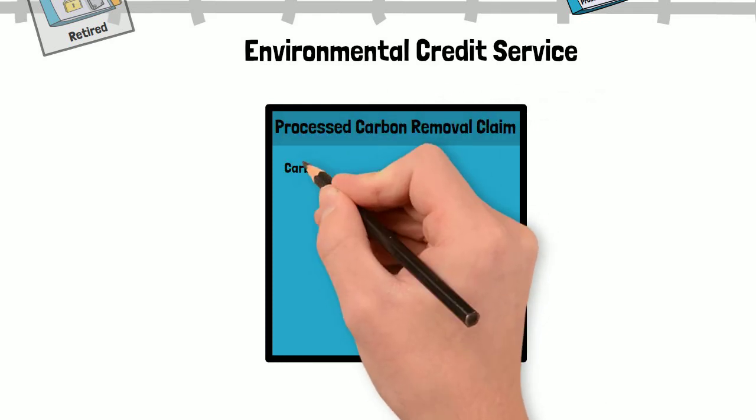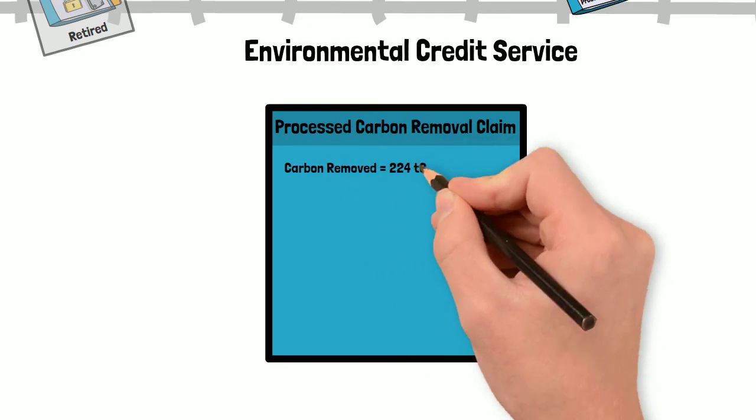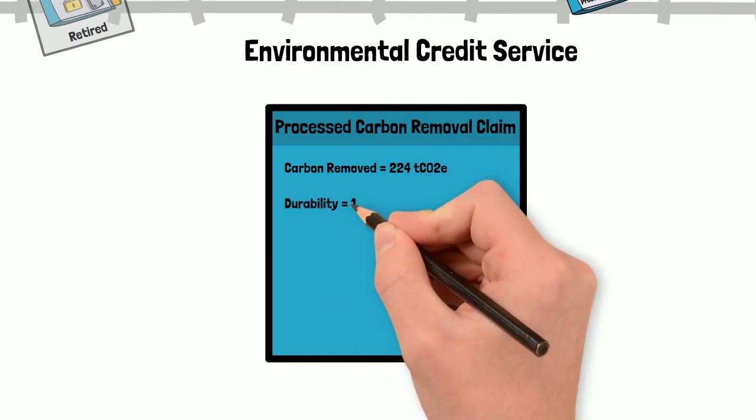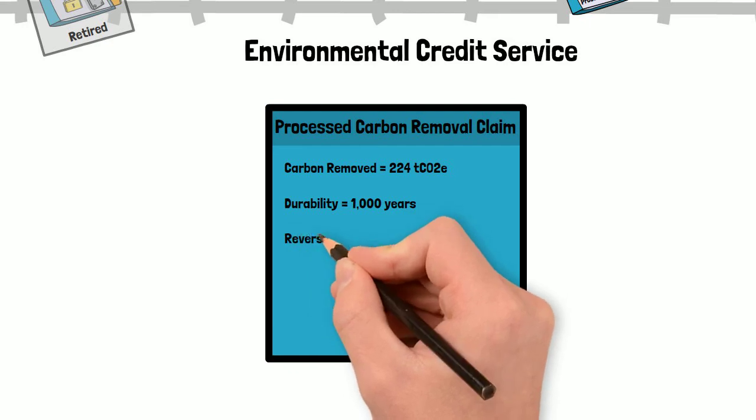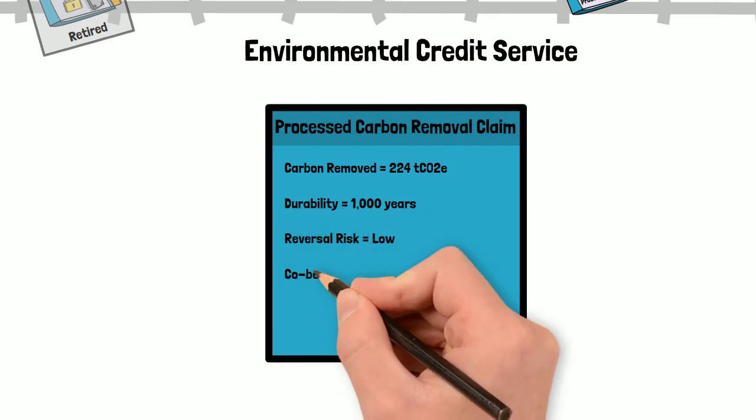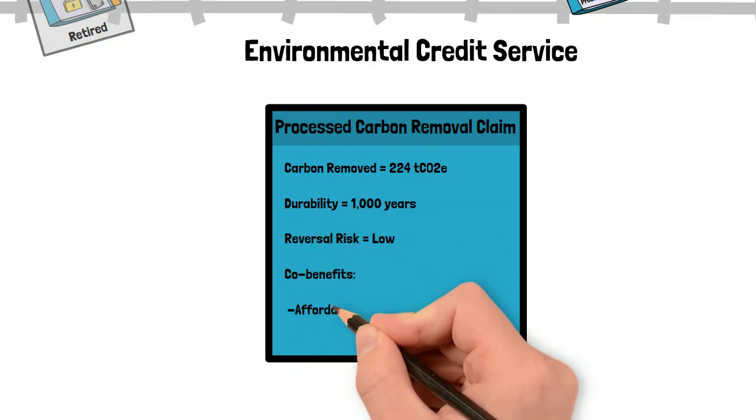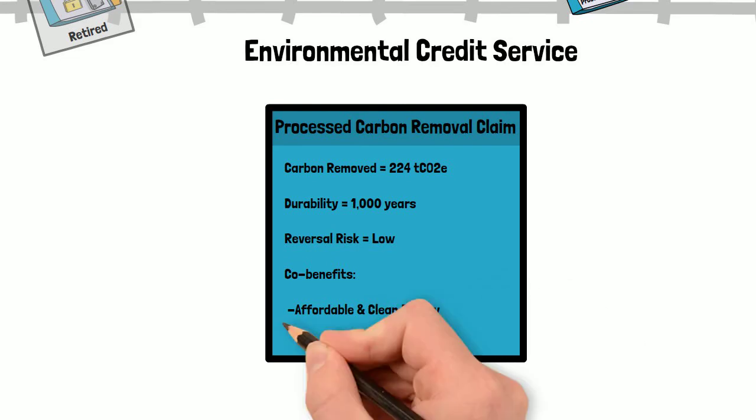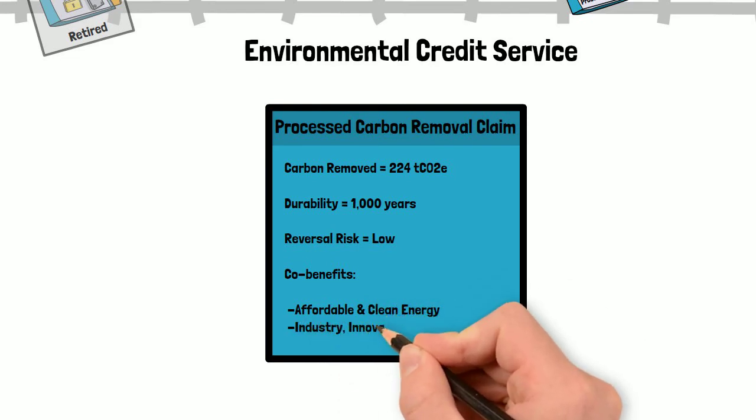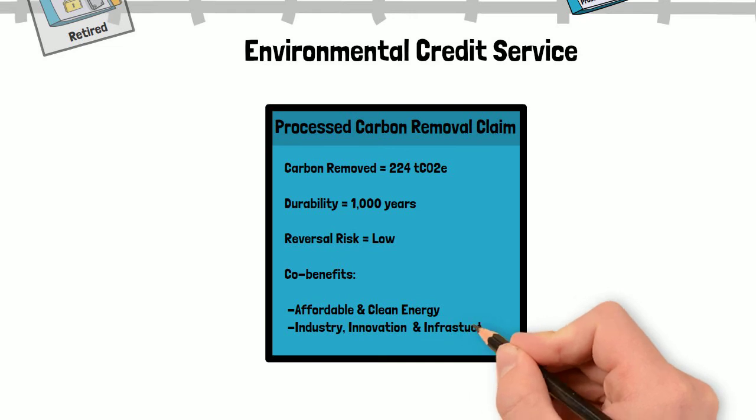For example, the processed claim will include properties for the total amount of carbon removed and the durability of the removal, indicating the termless sequestration, risk reversal, as well as how the reversal is mitigated. Other properties may include co-benefits that would map to the UN Sustainability Development Goals.